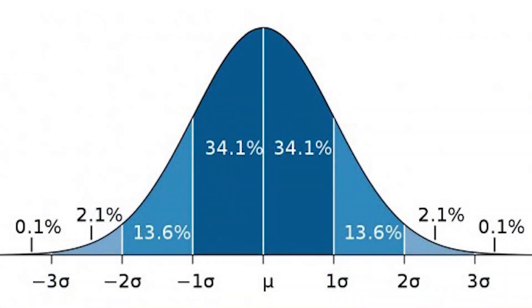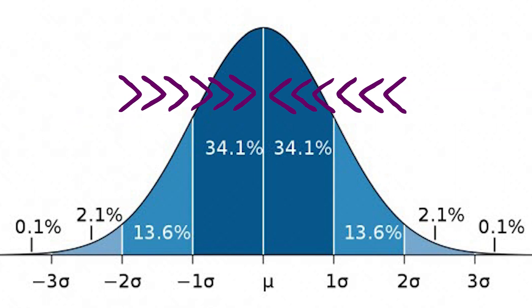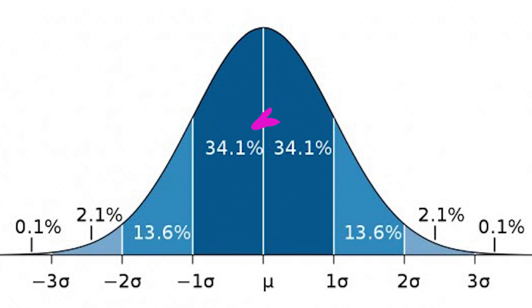A normal distribution, also known as a bell curve, is a statistical concept usually used to describe data that clusters around an average. Height is a great example of something that is normally distributed — average heights are pretty common, but extreme heights like very tall or very short people are rather uncommon. So when you put the data on a chart, it forms a curve that looks like a bell. In normal distributions, 99.7% of values lie between negative three and three standard deviations, 95% between negative two and two, and 68% between negative one and one. These numbers indicating the deviation are called z-scores, which are useful for understanding if a data point is an outlier. If something has a z-score above three, that data point is really uncommon — it's almost certainly an outlier.